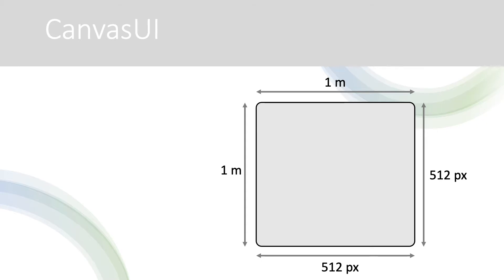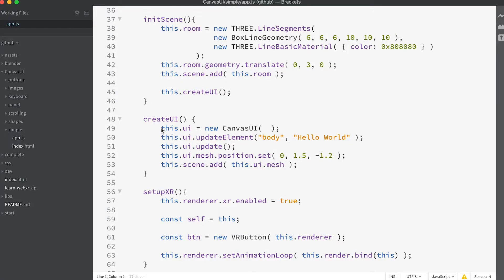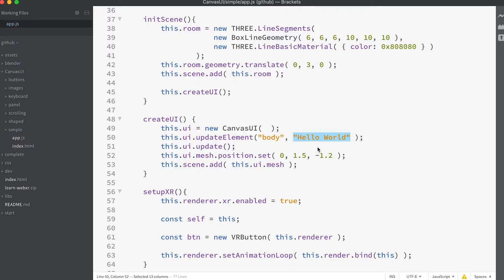A canvas texture is a texture made from a canvas element. In HTML5 a canvas is a surface that can be drawn on at the pixel level. An Arial font is applied and the size of the font is 30 pixels. There is 20 pixels of padding. The font color is white and the background color is black, and the canvas will have 6 pixel radius rounded corners. Having created the UI, we can use the class method updateElement to change the content of an element. A Canvas UI always contains a body element which by default has the type text. The updateElement method takes two parameters: first the name of the element, then the new content. Here we set the text of body to hello world.